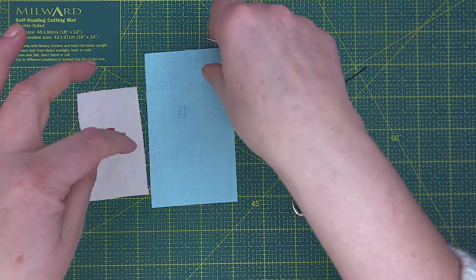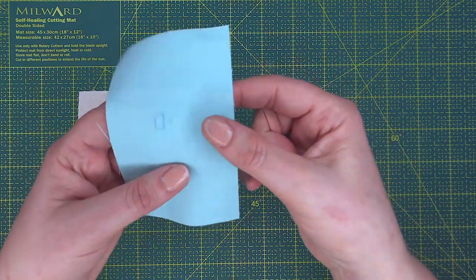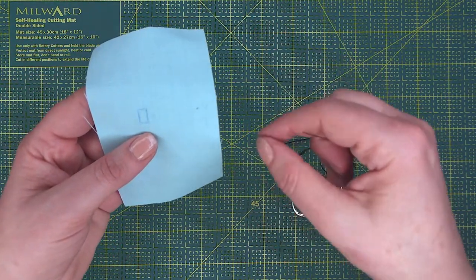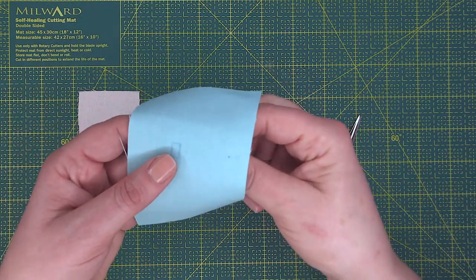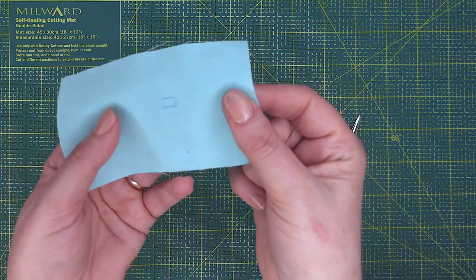This means you can stitch the face before you assemble the doll. The other way you would be stitching the detail onto the face after you've assembled the doll or the soft toy.